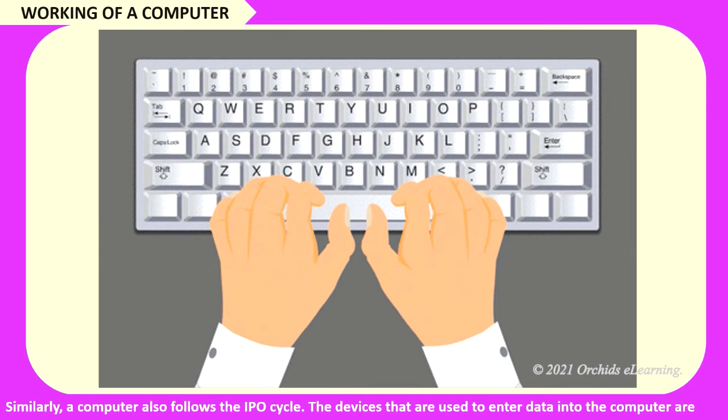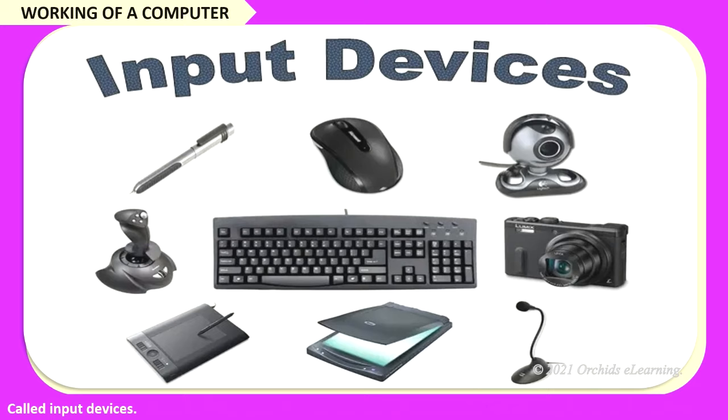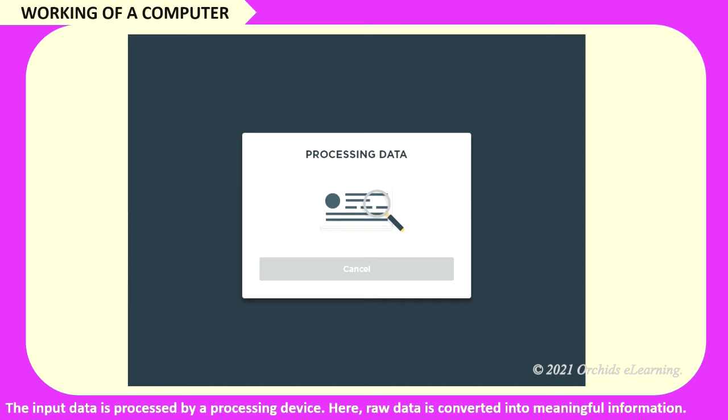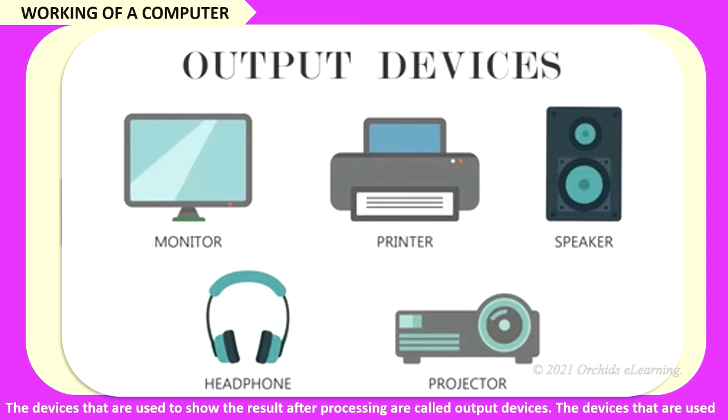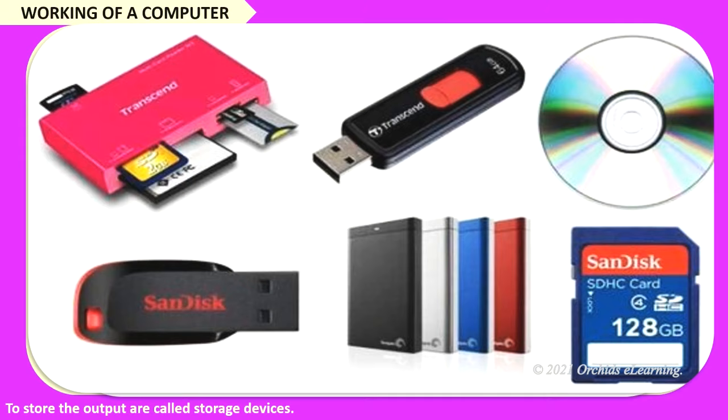The devices that are used to enter data into the computer are called input devices. The input data is processed by a processing device. Here, raw data is converted into meaningful information. The devices that are used to show the result after processing are called output devices. And the devices that are used to store the output are called storage devices.